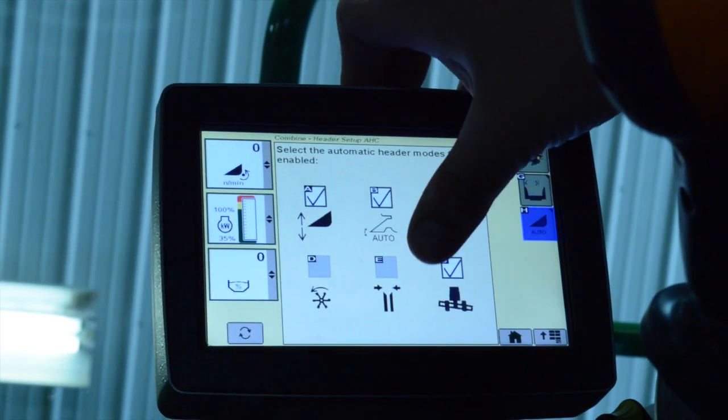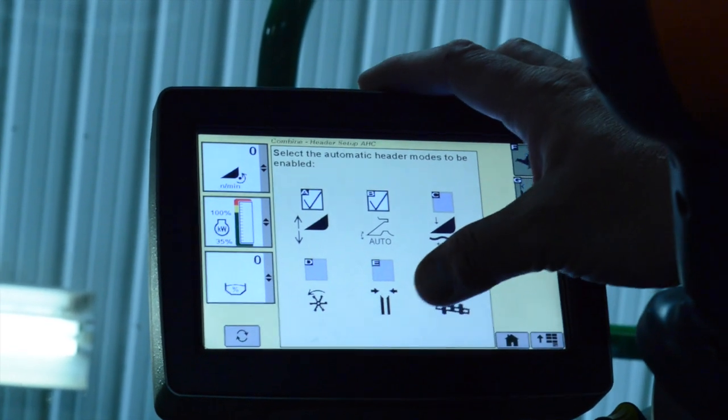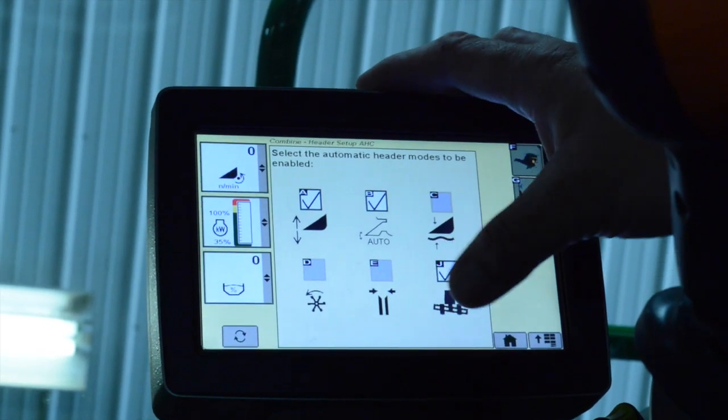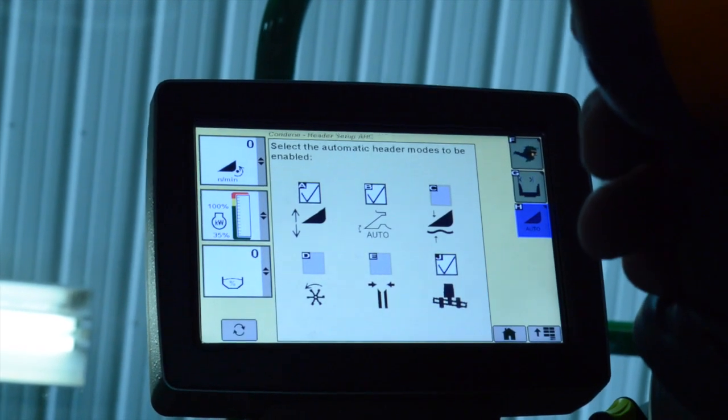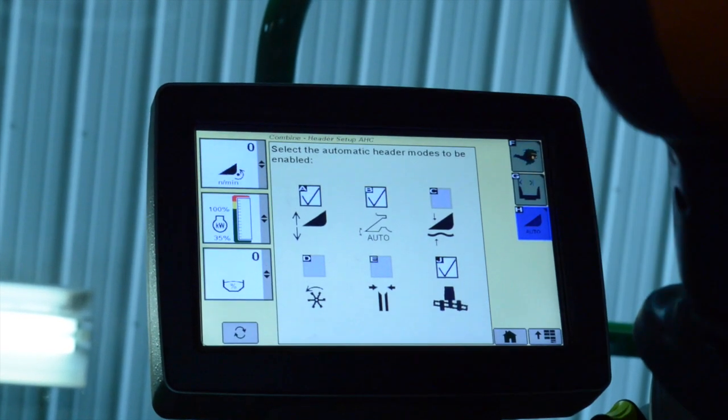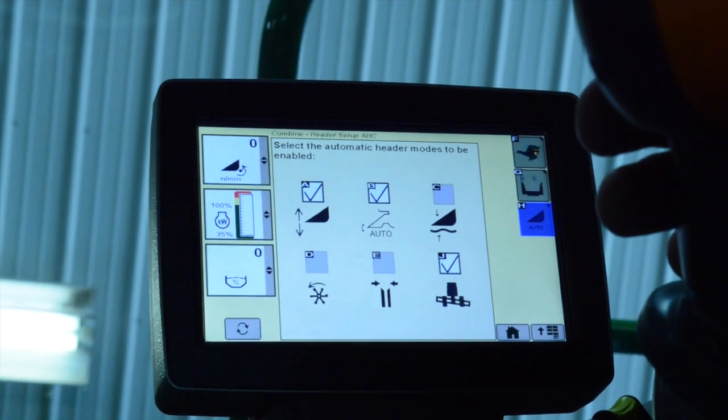The other option you have on a corn head is letter E here, which is your deck plate spacing. What that allows you to do is set the deck plates with the number one, two, and three to where you can return to a set point for your deck plates.